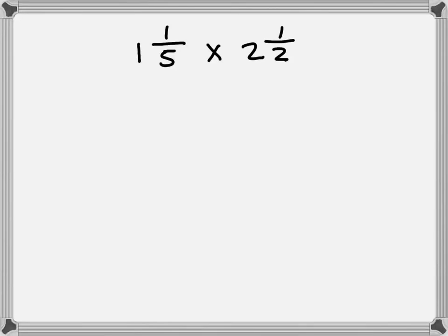Right, we're going to look at multiplying mixed numbers. You can see we've got two mixed numbers here. Now we're going to convert them both into improper fractions first, so let's start.